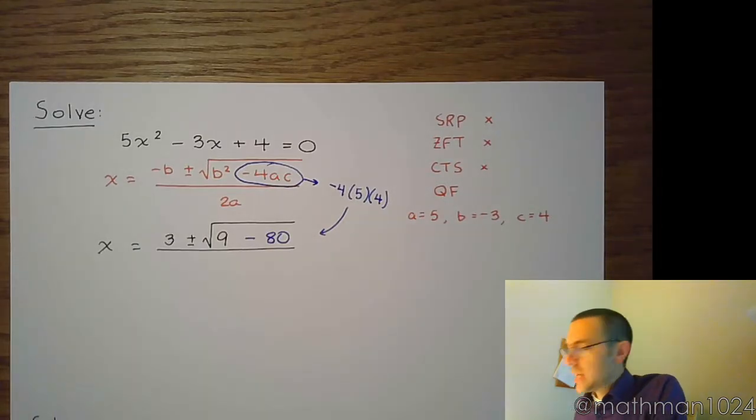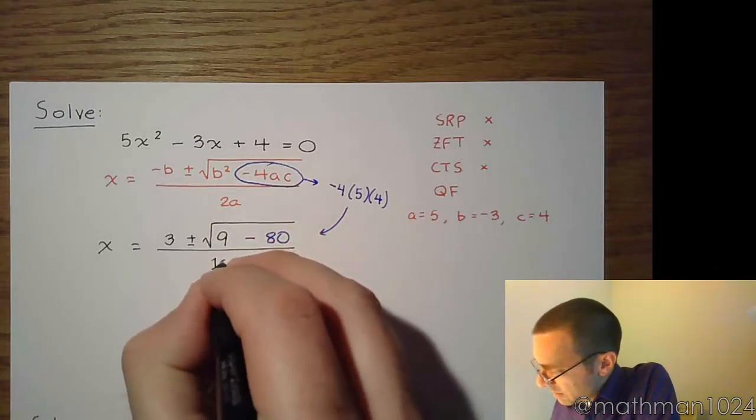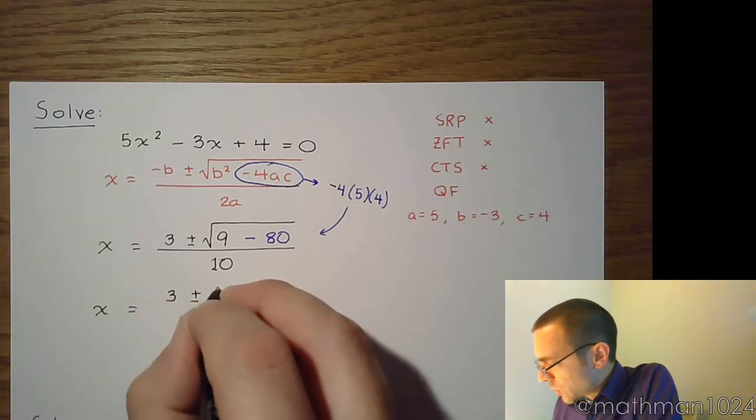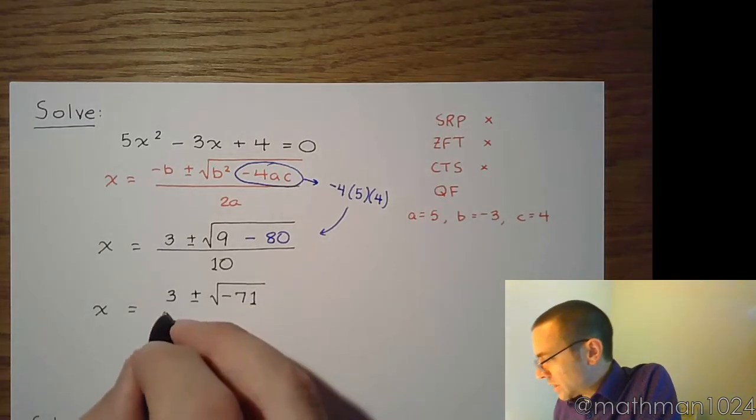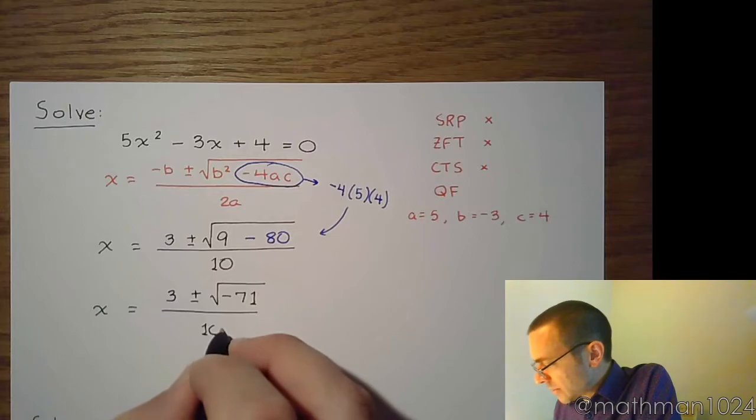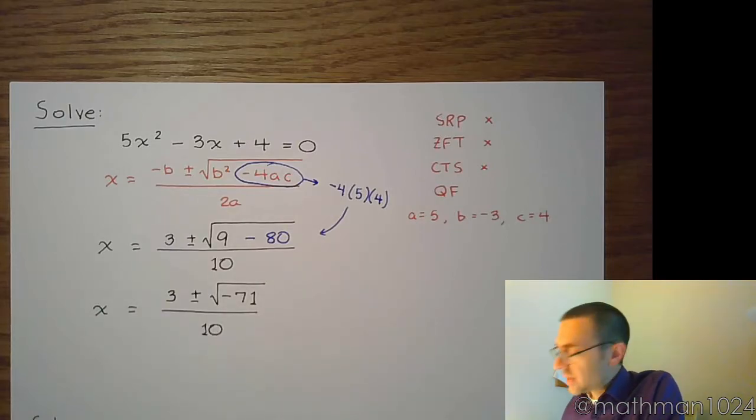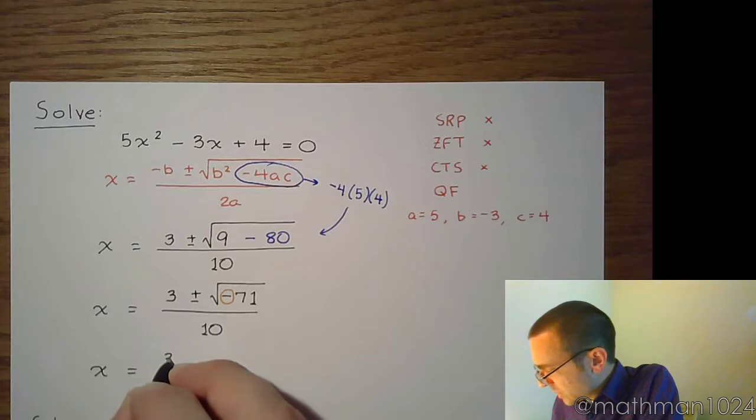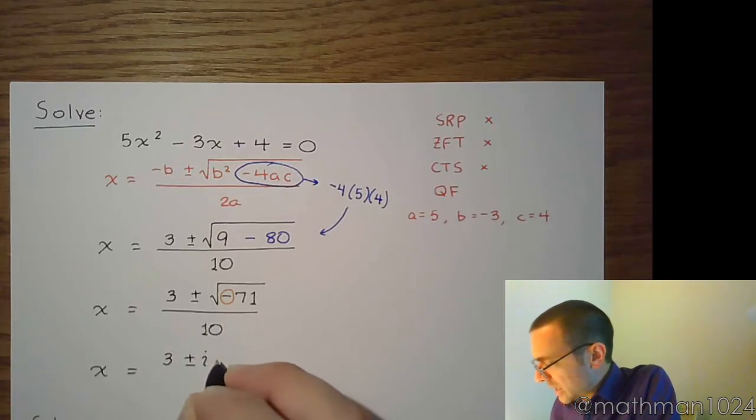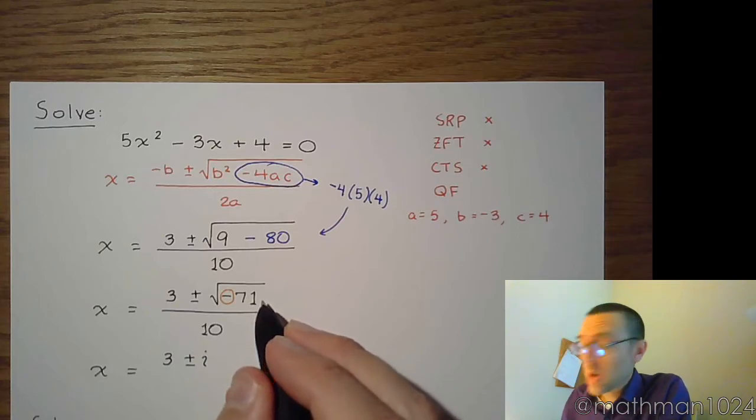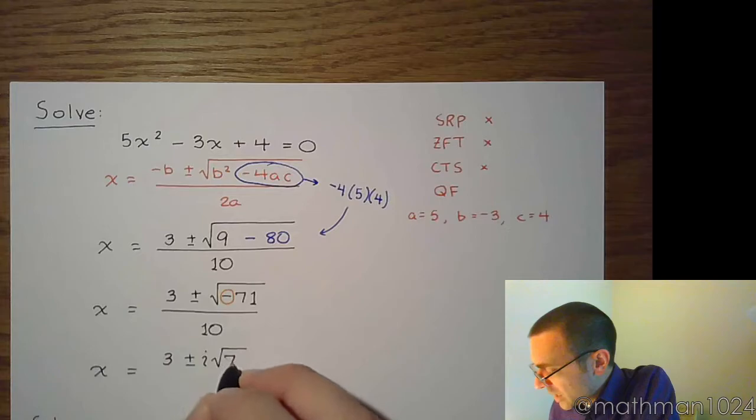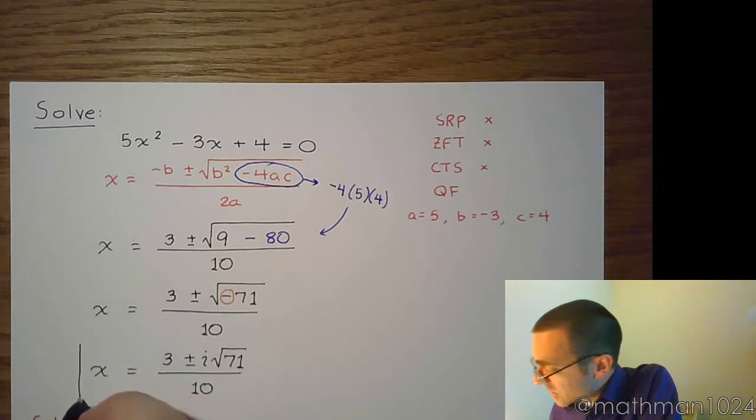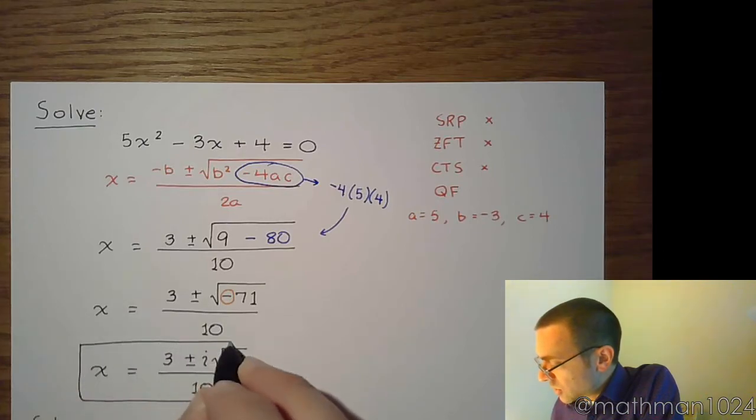All divided by 2a. a is 5, so 2 times a is 10. And now we just need to clean this up. So this is 3 plus or minus the square root of negative 71, all divided by 10. The only thing that we can do here to further simplify this is to see the negative factor inside the radical, which means we get to simplify an imaginary unit out in front. So that's i, and then 71. 71 is prime, so we can't do anything with that. So he stays inside the radical of 71, and this is all over 10. It is not the prettiest of solutions, but it is the solution to this equation.